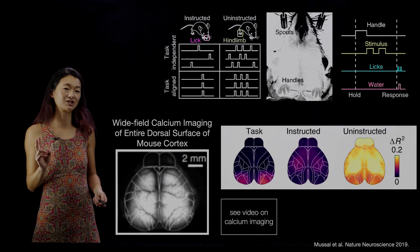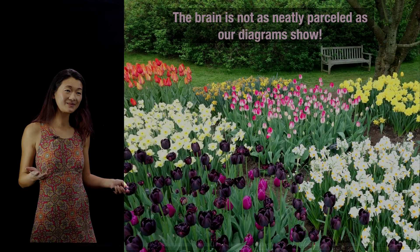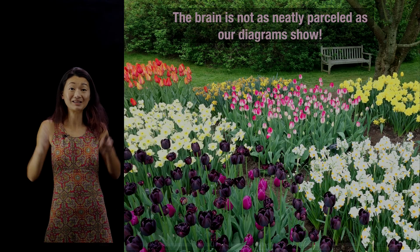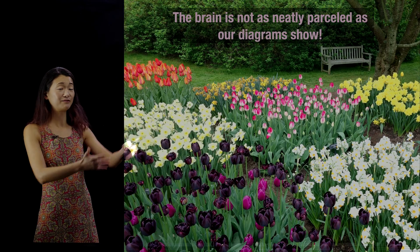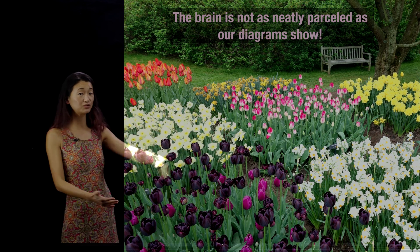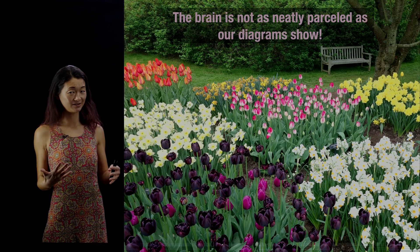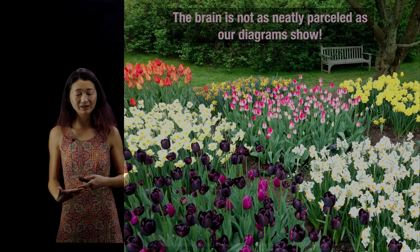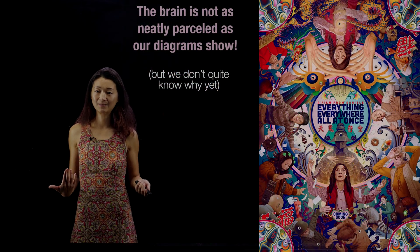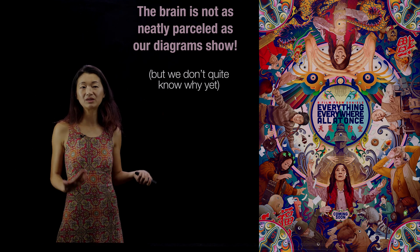Both of those pieces of evidence go towards the overall point — and there are lots of papers, especially recently, making a similar point — that the brain is not nearly as neatly parcellated as our diagrams show. We draw these lines as if they were real things — auditory cortex, parietal cortex, prefrontal cortex — it's as if we were planting tulips in the sky: purple tulips go here and pink tulips go there and you will not cross this line. That is not how the brain works. There's a lot of feedback, and all of these brain areas actually talk to each other in ways we are just beginning to understand. Everything is everywhere, but we don't quite know why.